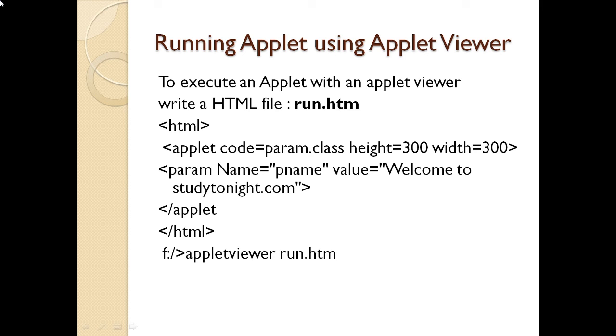I have specified here 300 by 300. I give a param name as pname and I give a value to that welcome to studytonight.com. So, and then I close the applet tag. I close the HTML tag. Now, how do I execute this? So, I have to execute the HTML file with the applet viewer run.htm. After you run this file, this is what you are going to get the output.